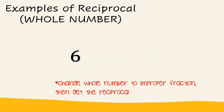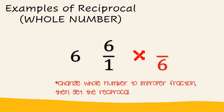For examples of a reciprocal of a whole number, change the whole number to an improper fraction by simply writing 1 as the denominator of the whole number, and then get the reciprocal. So, 6 will have 1 sixth as its reciprocal.